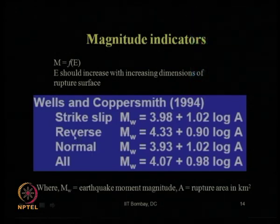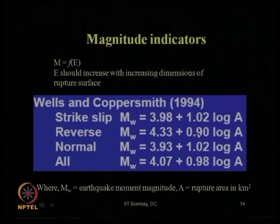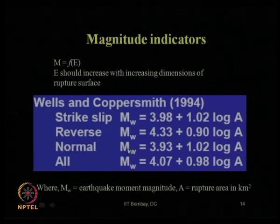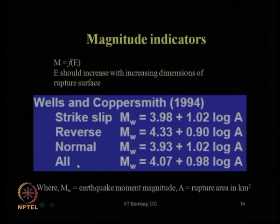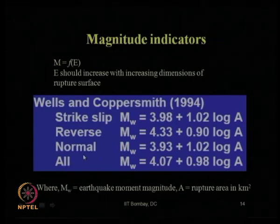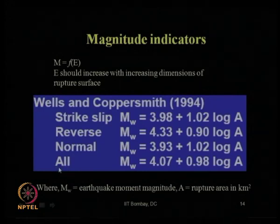Similarly, for a reverse fault, Mw can be obtained using their equation. For a normal type of fault, it can be estimated using another expression. If you are not sure about what type of fault, you should use the equation valid for all fault types. It is important to be careful about the unit — the rupture area A must be in kilometer squared.